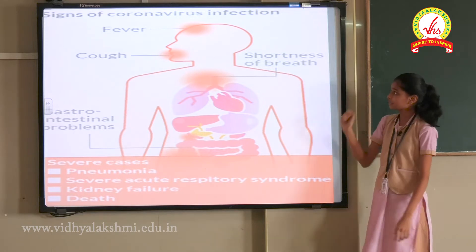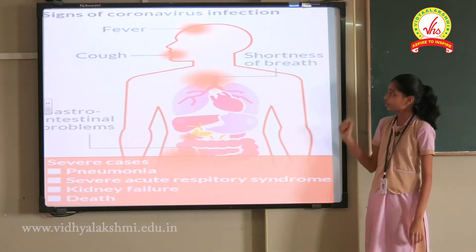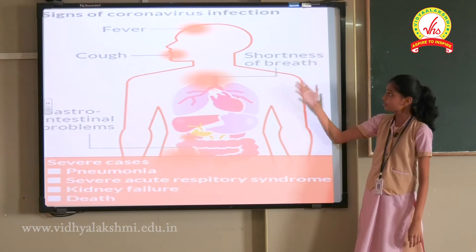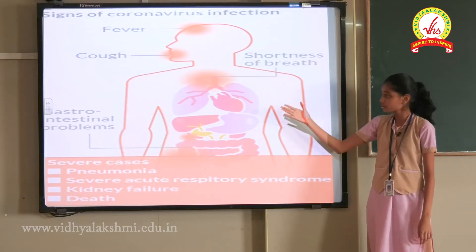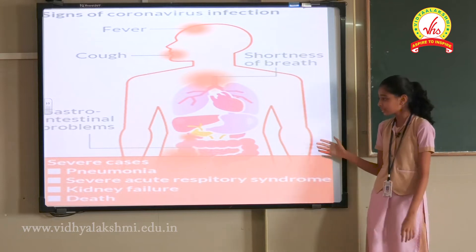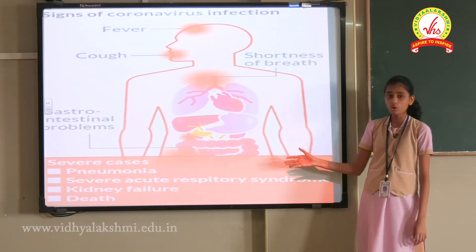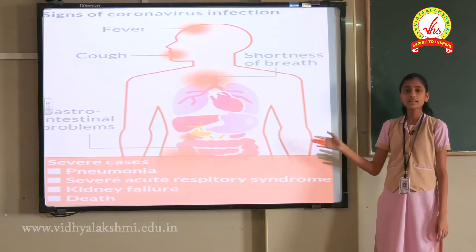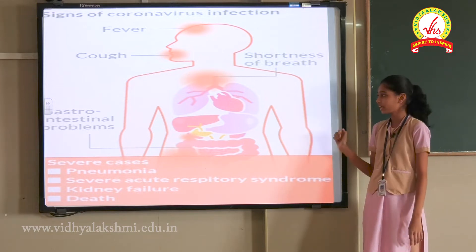Signs of coronavirus infection: In the first stage, a person can get fever, cough, shortness of breath, and gastrointestinal problems. In severe cases, the person can also get pneumonia, severe acute respiratory syndrome, kidney failure, and even death.